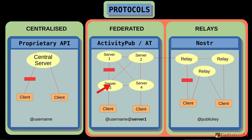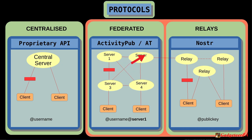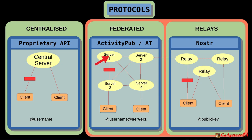Between servers themselves in the Fediverse, they can also institute blocks — one server can block federation with another. Sometimes a whole bunch of servers will block a particular server because of what's being posted there; that's their freedom of choice. It doesn't stop the people on the blocked server still posting among themselves, it just means people on other servers won't see those posts. The AT Protocol used by BlueSky is similarly a decentralized network — currently everyone signs up at BlueSky as the main instance, but as more servers come in it will work the same way.